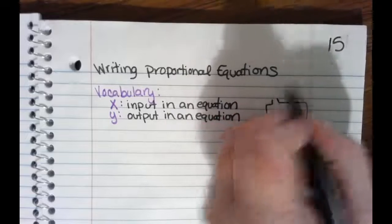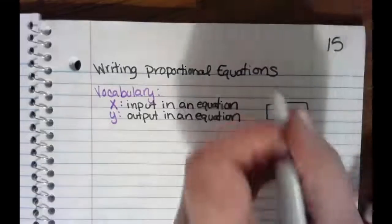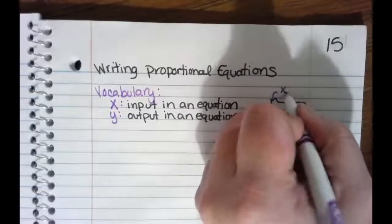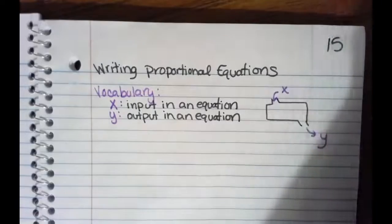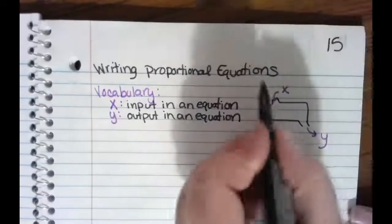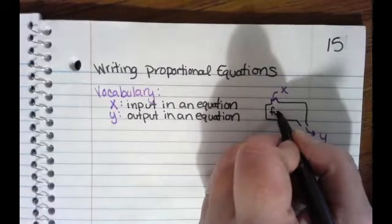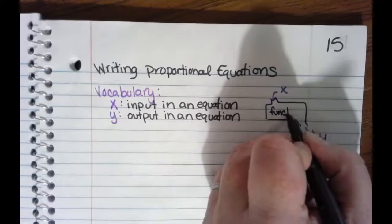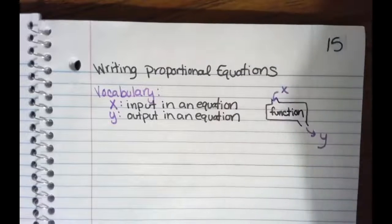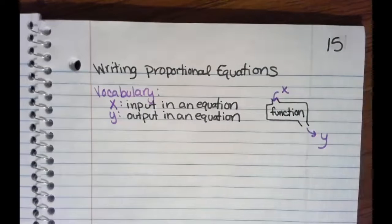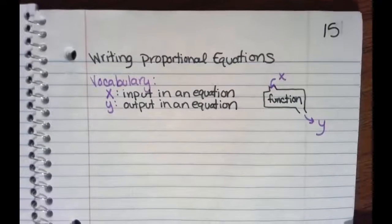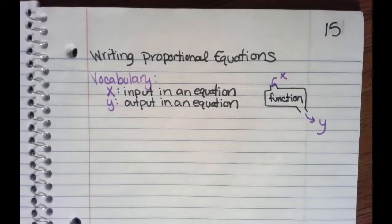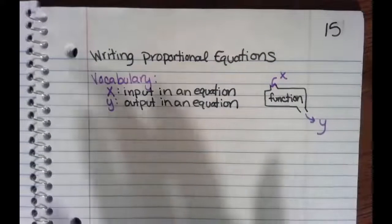X goes in and Y comes out, and this is the actual function — whatever we do to it. In a proportional relationship, we're always going to multiply by something. We're never squaring, never square rooting, never adding or subtracting. We're only multiplying.